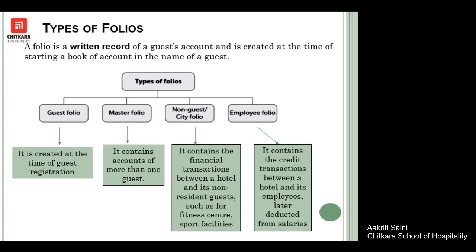The non-guest or city folio records transactions between the hotel and a non-resident guest — someone not staying at the hotel. These folios are created for people availing facilities like a fitness center, sports activities, business center printing, or photocopying services. The employee folio contains credit transactions between the hotel and an employee, and the amount is deducted from the employee's salary. For example, if an employee takes a cake from the bakery, the charge is deducted from their salary the following month.